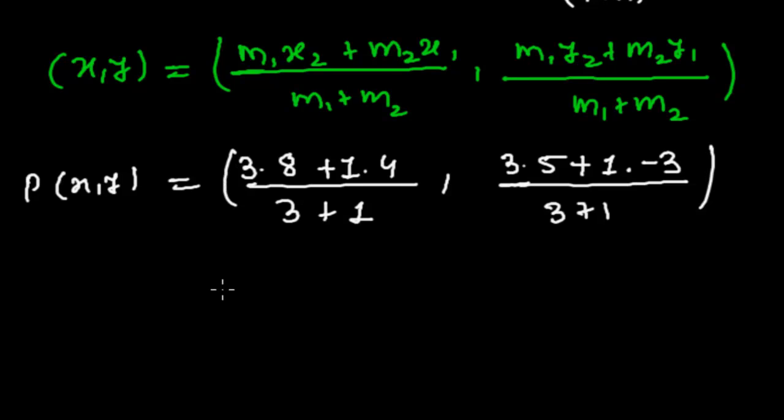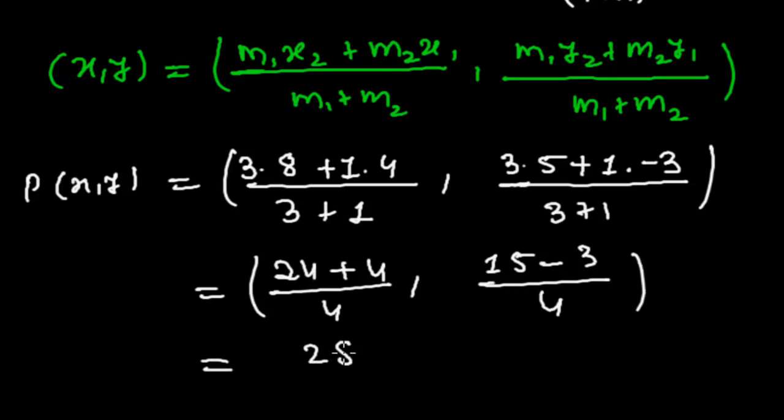Let me close this. So 3×8 is 24 and 1×4 is 4, whole divided by 3 plus 1, that is 4. 3×5 is 15, and plus minus it is minus, so 1×3 is 3, and whole divided by again 4. 24 plus 4 is 28 divided by 4, and 15 minus 3 is 12 divided by 4.